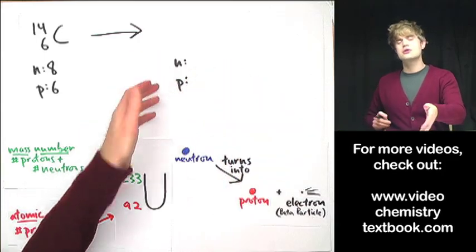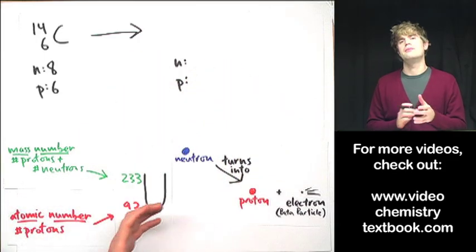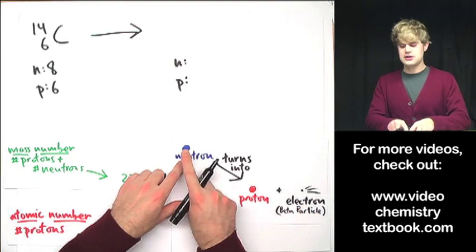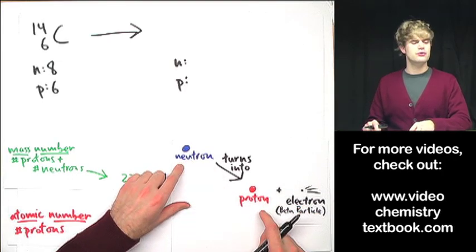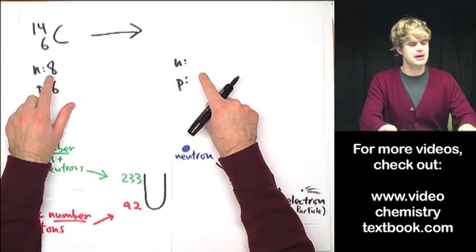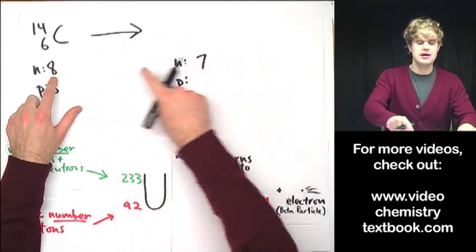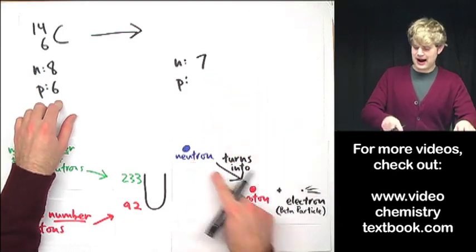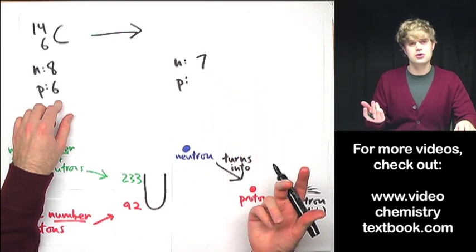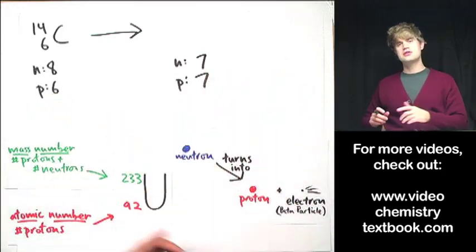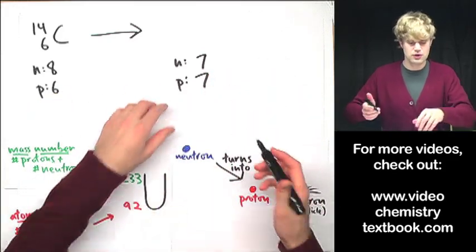Now let's look at what I'm going to get after beta decay happens. What do we say happens with beta decay? It's that a neutron turns into a proton. So that means that after this happens, I started with eight neutrons, now I'm going to end up with seven neutrons. But I get a new proton because that's what the neutron turned into. So I used to have six protons, now I have seven protons.